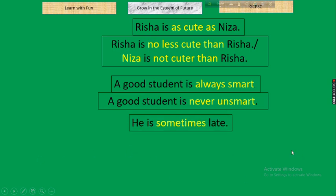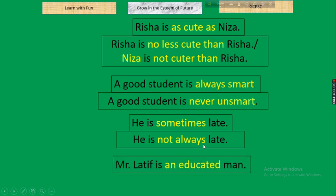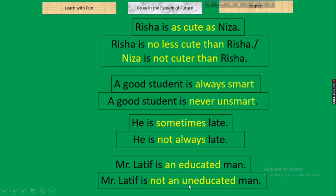Next: 'He is sometimes late.' Parameter: 'sometimes.' In negative: 'not always.' So: 'He is not always late.' Also: 'Mr. Lothev is an educated man' — adjective rule: not + opposite adjective. Result: 'Mr. Lothev is not an uneducated man.' Rule: adjective → not + antonym of adjective.